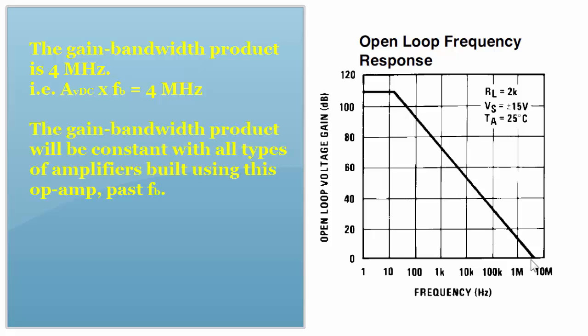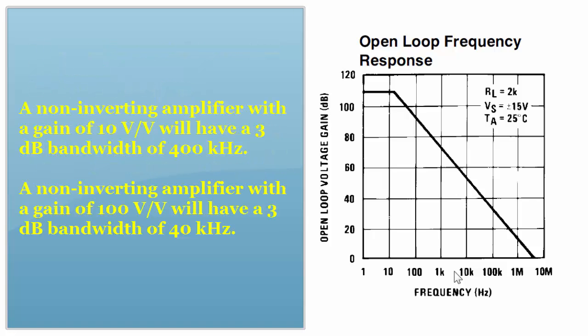That is, if we were to design an amplifier on any point along this curve, the gain times the 3 dB frequency of that amplifier will be 4 megahertz. If you design an amplifier with a gain of 10, its 3 dB bandwidth should be 400 kilohertz. If you design an amplifier with a gain of 100, its 3 dB bandwidth should be around 40 kilohertz.